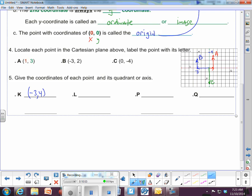Point L. One, two, three, four, five. Negative five along the X axis. And zero along the Y. So negative five, zero.